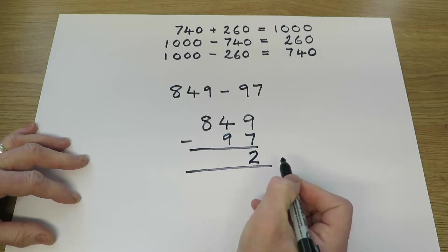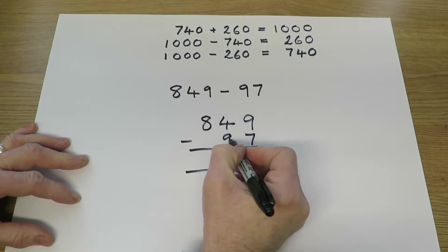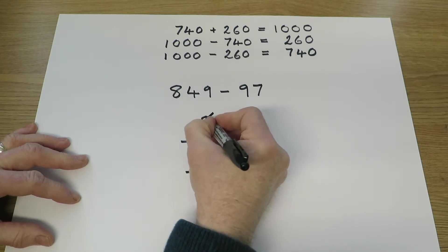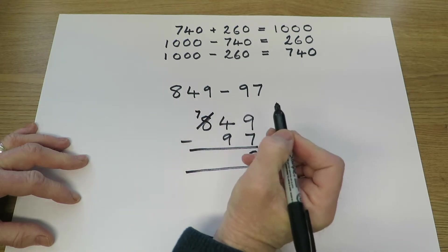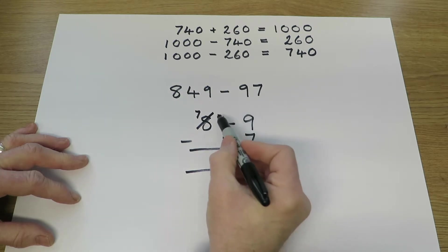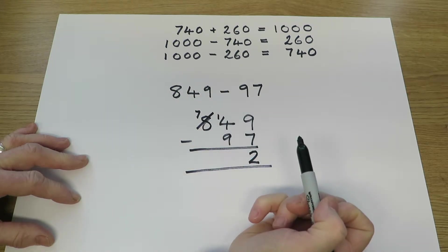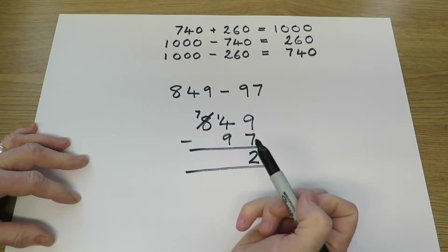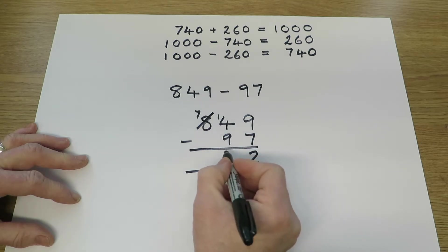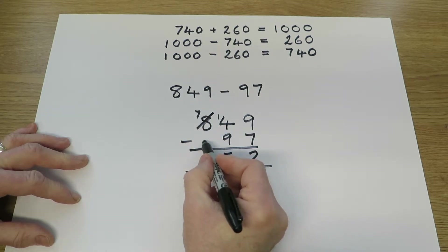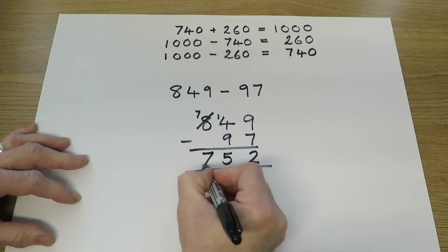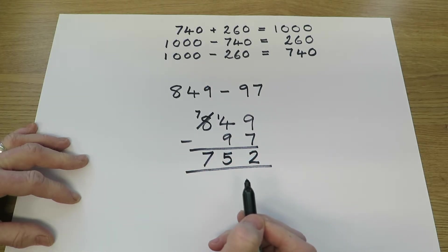9 take 7 is 2, 2 units. 4 tens take 9 tens. We haven't got enough tens, so we're going to use one of the 100s to give us 10 extra tens, so that now we've got 14 tens, but only 7 hundreds. 14 take away 9 is 5, and of course 700 take away nothing is 700. Final answer is 752.